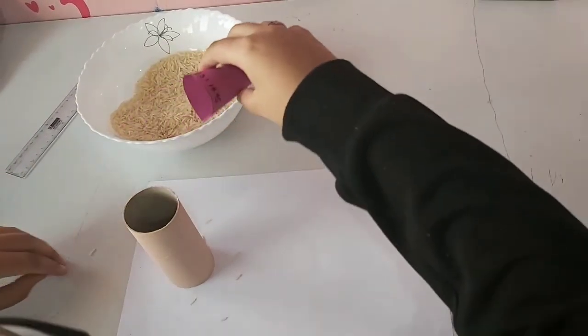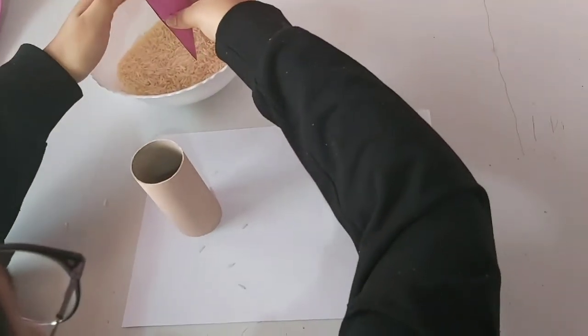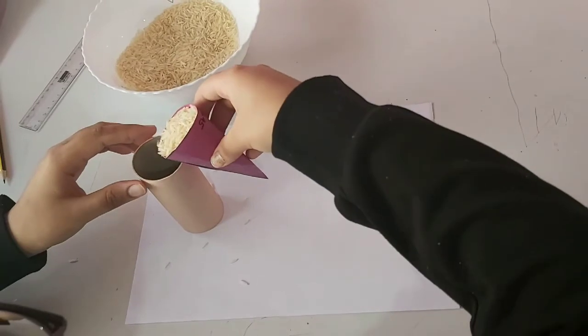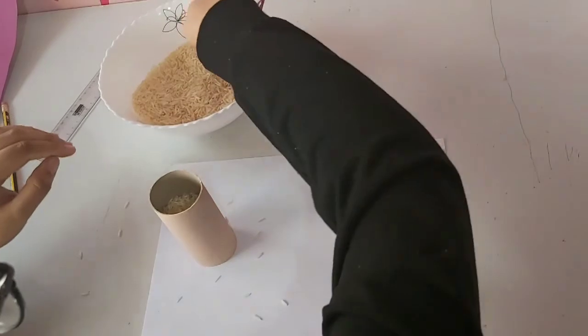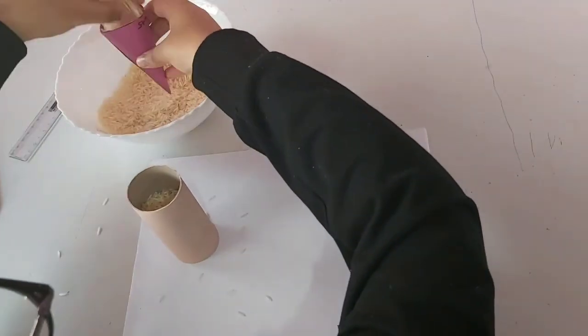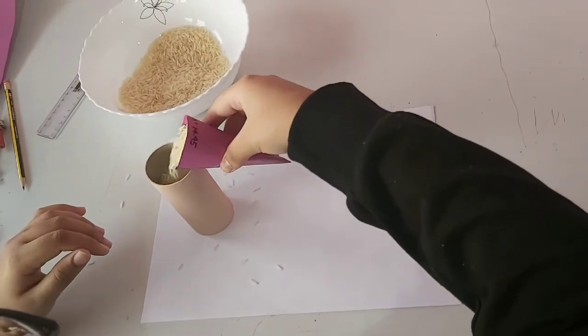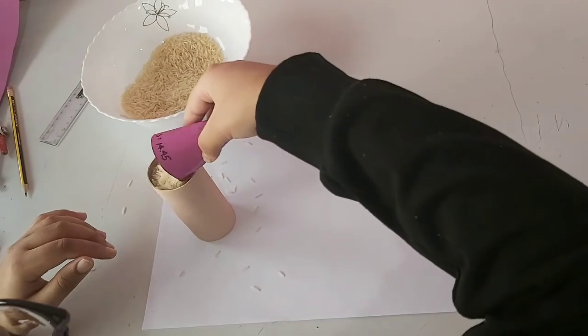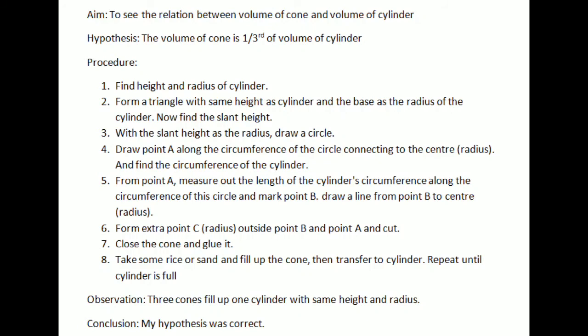Thus, 3 cones equals 1 cylinder. Thank you.